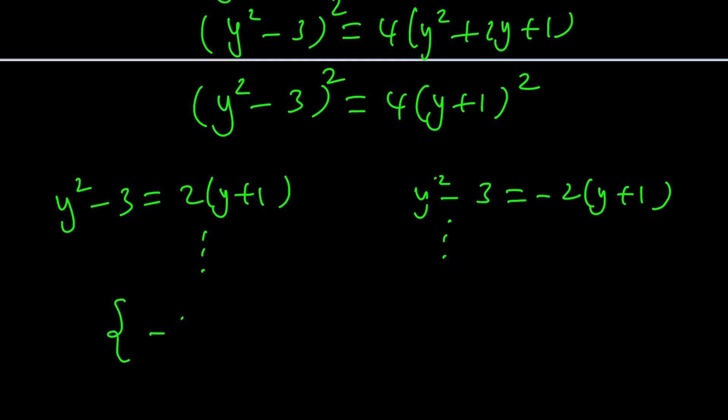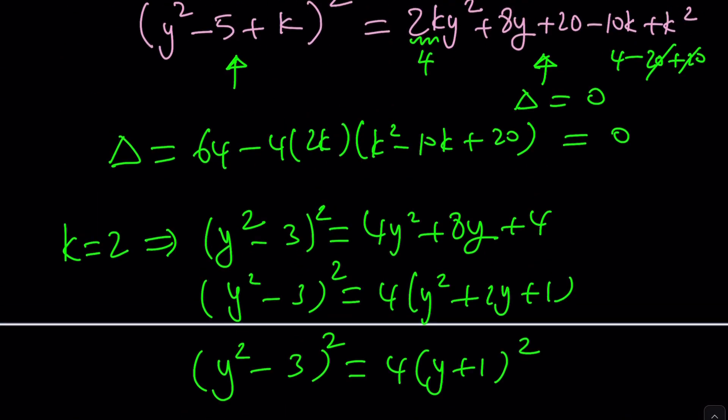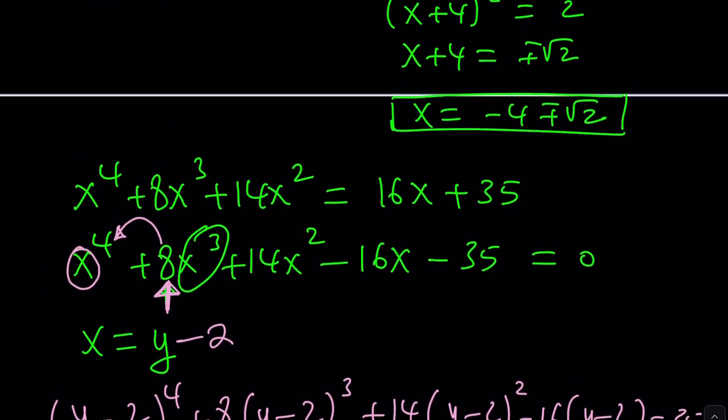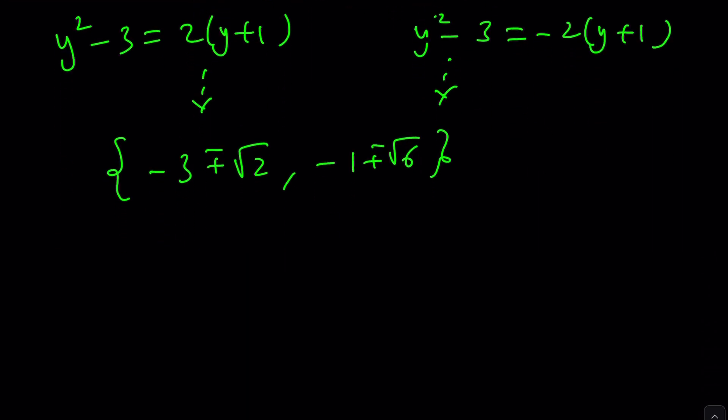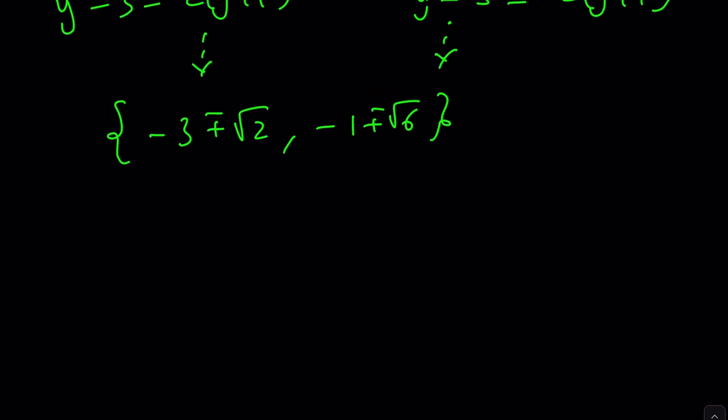But let me tell you, after all these, you're going to get the solutions as negative 3 plus minus root 2, negative 1 plus minus root 6—those are the x values. You got to be careful because after finding y, we have to back substitute. Now if you use the other method, you should get the same thing. And notice that this is not a value that would make the denominator zero, so we're in good shape—but it's kind of close, right? Yeah, got to be very careful with that.